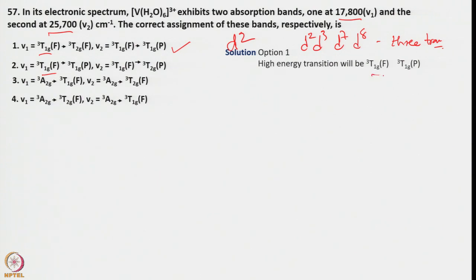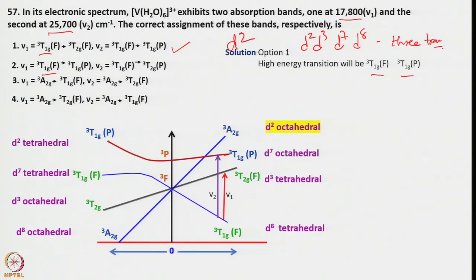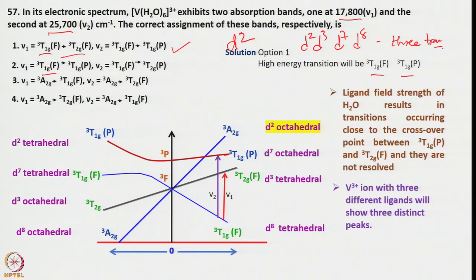In a D2 system, from the simple Orgel diagram you can find the ground term. The two transitions are: ³T1g(F) → ³T1g(P) at higher energy, and ³T1g(F) → ³T2g(F) at lower energy. The reason only two transitions appear is that the ligand field strength of water results in transitions occurring close to the crossover point between ³T1g(P) and ³T2g(F). This is more pronounced for D7 or D8 systems — the energy difference is very small, so those transitions merge and you get only 2 instead of 3.